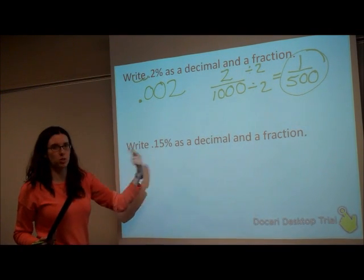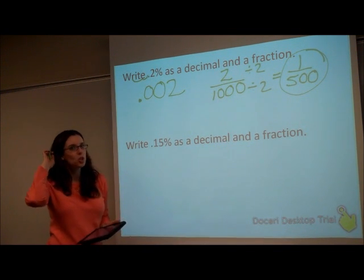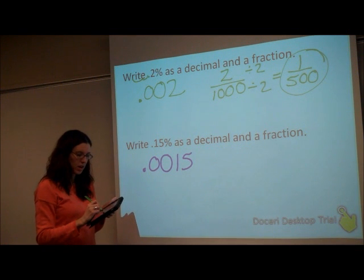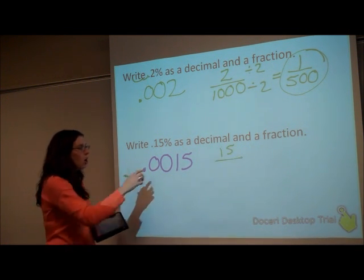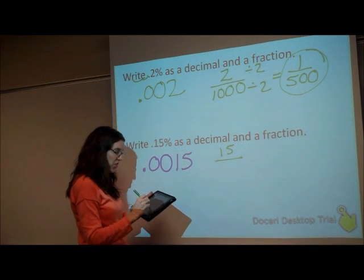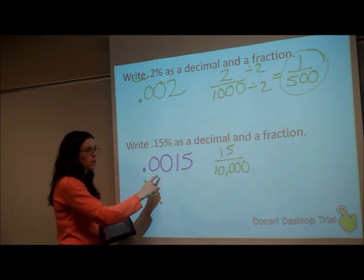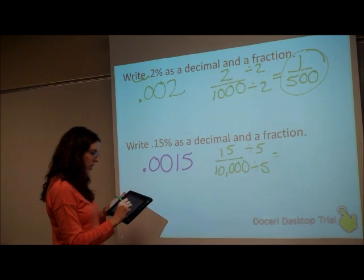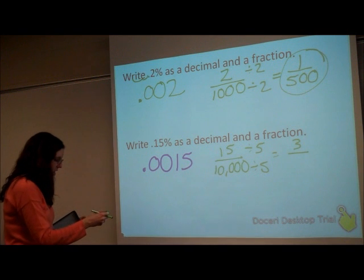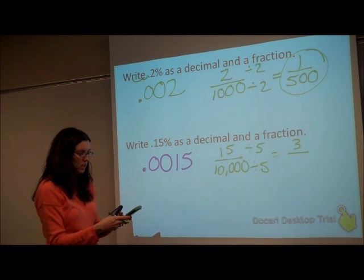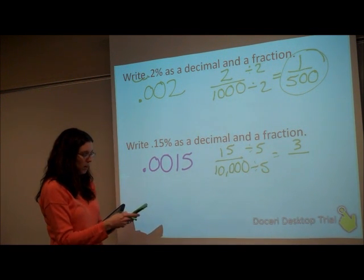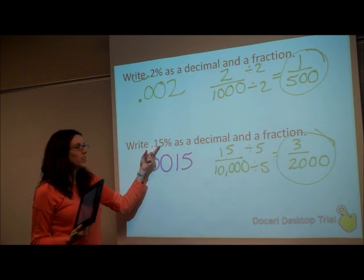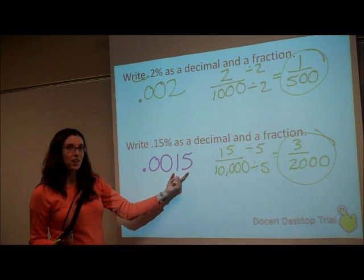Try to write 15 hundredths percent on your own. Press play when you're ready. So moving it two places to the left for our decimal gives us 0.0015. Now for our fraction, it'll be 15 over — tenths, hundredths, thousandths, ten-thousandths — so we have 15 ten-thousandths. We can divide both by 5, since they both end in 5 or 0. My numerator will be 3, and 10,000 divided by 5 is 2,000. So 15 hundredths percent as a decimal is 0.0015, and as a fraction it's 3 over 2,000.